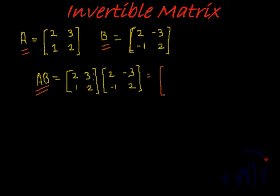element will be 2 times 2 plus 3 times minus 1, which will be 1. And the next is 2 times minus 3 plus 3 times 2, which will be 0. Now for the other two elements, 1 times